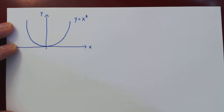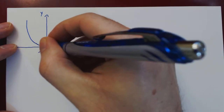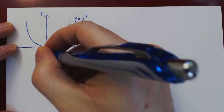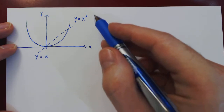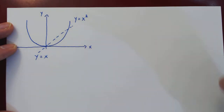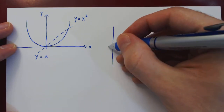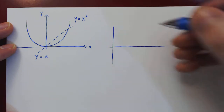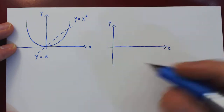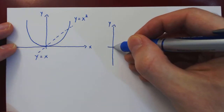The square root of x, being the inverse of x squared — to obtain its graph, we look at the line y equals x. If we reflect the graph of y equals x squared about the line y equals x, we will obtain the graph of square root of x. Reflecting x squared about y equals x, we return the parabola, but now sideways.